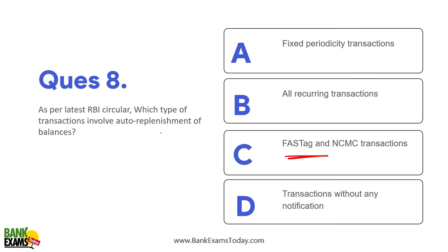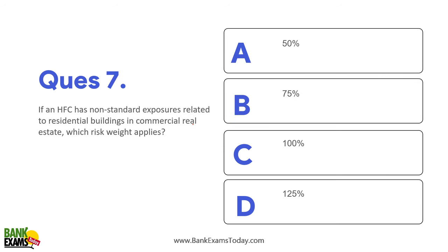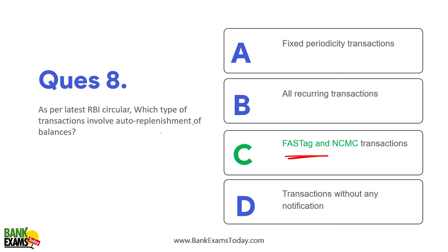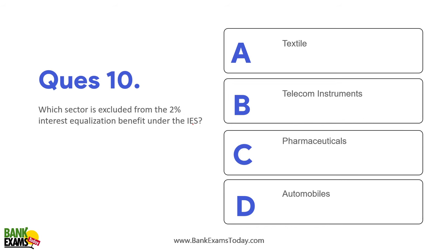To recap: the risk weight set by RBI for standard exposure on commercial real estate residential projects is 75%; for non-standard it is 100%. Regarding the Interest Equalization Scheme (IES), the interest equalization rate for MSME manufacturer exporters is 3%. This benefit is now only available for MSMEs. The telecom instruments sector is excluded from the 2% interest equalization benefit under IES.